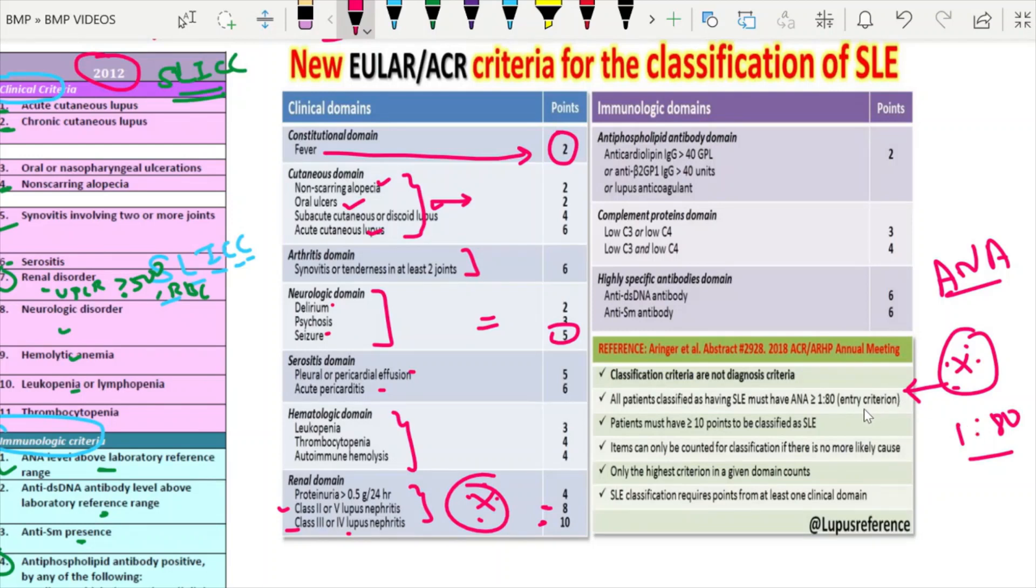So this is the criteria they have made in the new EULAR ACR criteria. Once the patient enters the entry criteria for this SLE, then only you can allot the points and the total point have to be more than 10. Like as I told, there are domains: constitutional domain, cutaneous domain, arthritis domain, neurological domain, serositis, hematological, renal domain. Points will be given to the higher scored symptom. In the immunological, anti-APLA positive, low complement, look at the scores how it is being given. So once the ANA is positive, then it forms the entry criteria, then you have to make the diagnosis.